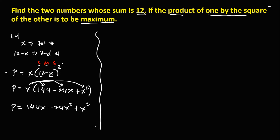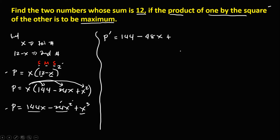Then we need to find the derivative. So P prime equals the derivative of 144x, which is 144, minus the derivative of 24x squared, which gives 48x, plus the derivative of x to the power 3, which is 3x squared.